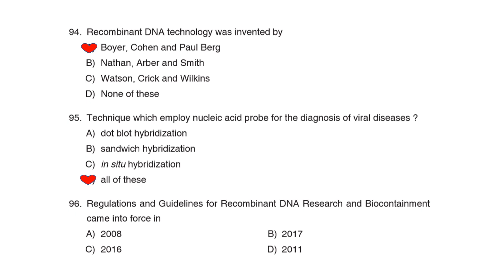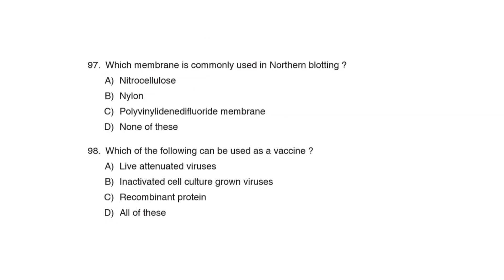96th Question: Regulation of the guidelines for recombinant DNA research and biocontainment came into force in Correct Answer: Option B: 2017. 97th Question: Which membrane is commonly used in Northern blotting? Correct Answer: Option B: Nylon. 98th Question: Which of the following can be used as a vaccine? Correct Answer: All of these.